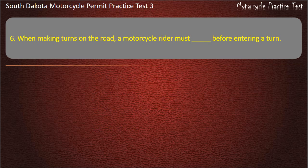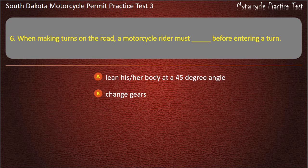Question 6: When making turns on the road, a motorcycle rider must, before entering a turn: Lean his or her body at a 45 degree angle; Change gears; Use the front brake; Not change gears. Answer: Change gears.